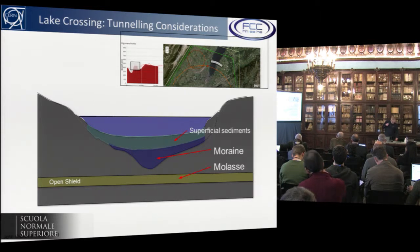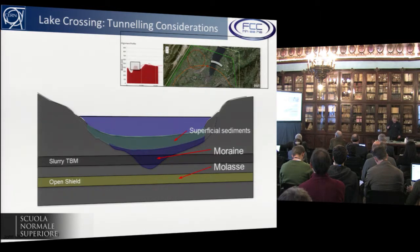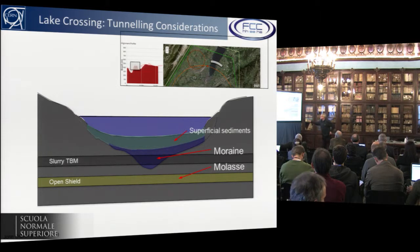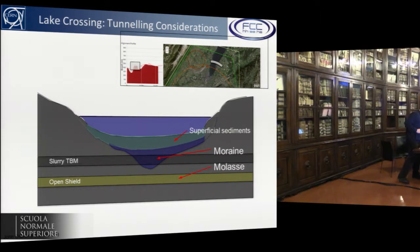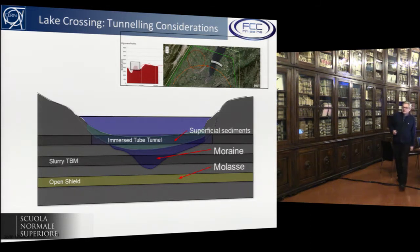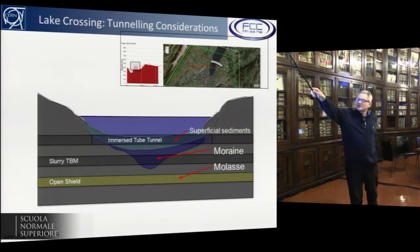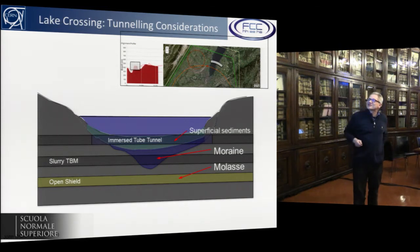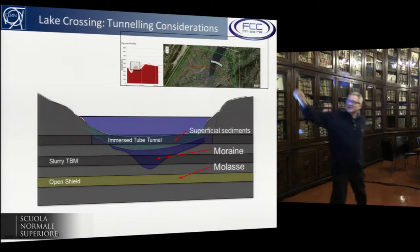Three options are studied for the lake crossing, and tunnel construction would be different for each. One option uses an open shield tunnel boring machine through the molasse. Going about 50 meters up, one would go through the moraine and need a different type of tunnel boring machine. There is also the option of an immersed tube tunnel, sinking concrete elements through the water onto the ground of the lake, going through superficial sediments. All options are being studied.